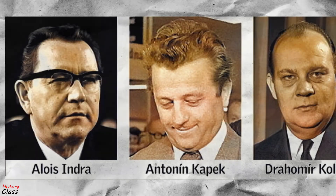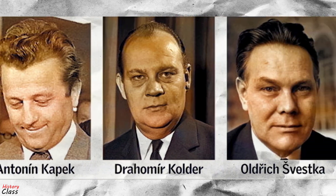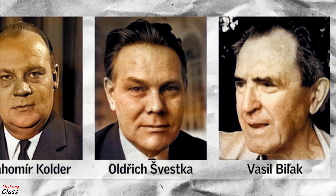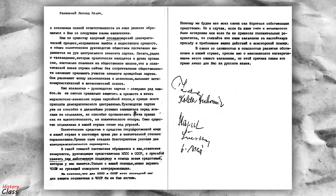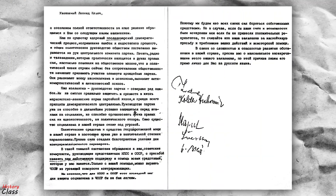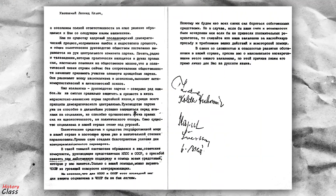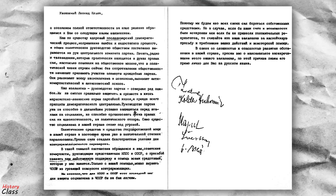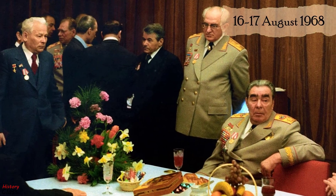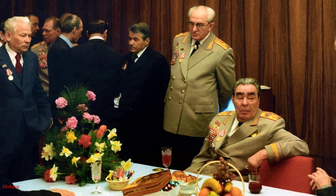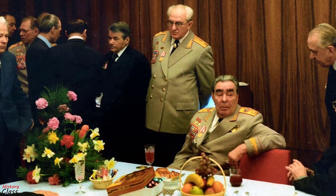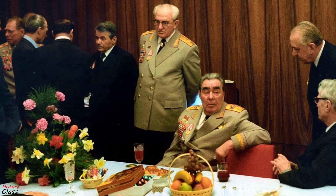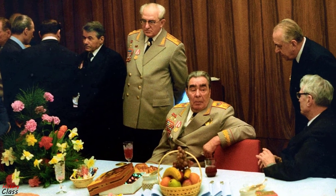A small group of pro-Moscow hardliners in the Czechoslovak Communist Party, led by Vasil Bilak, wrote two letters requesting urgent assistance from the Soviet Union to counter what they called the imminent counter-revolution in Czechoslovakia. The 16-17 August Soviet Politburo meeting unanimously passed a resolution to provide help to the Communist Party and people of Czechoslovakia through military force.